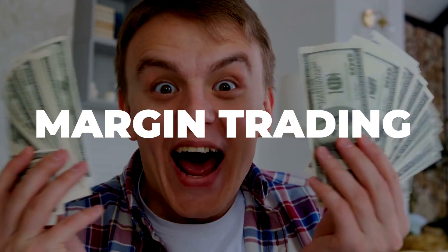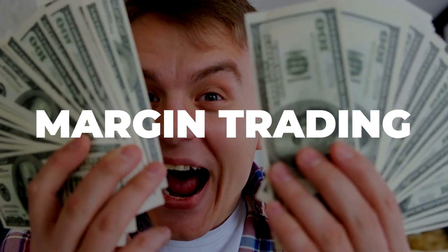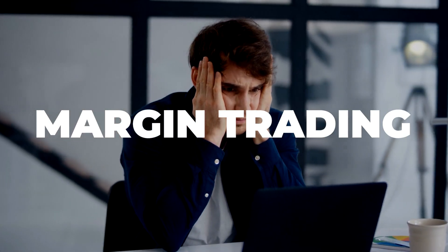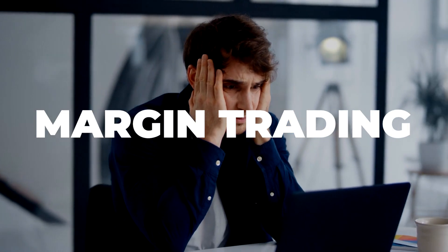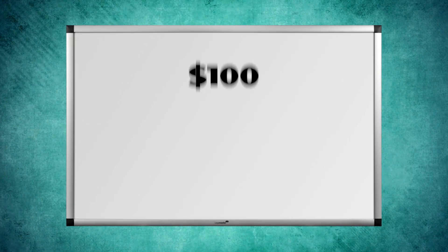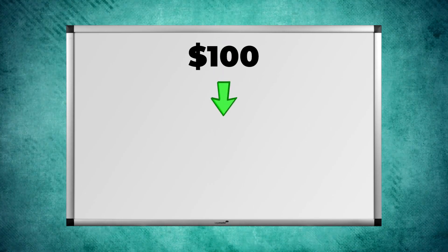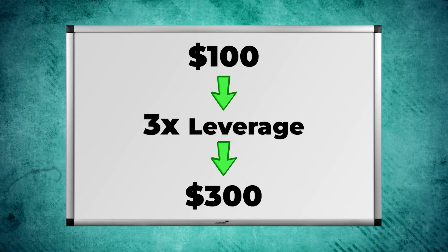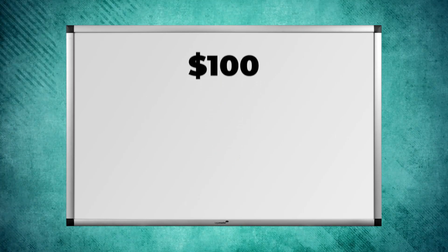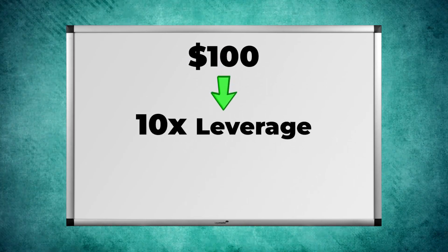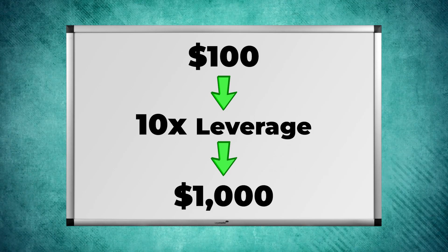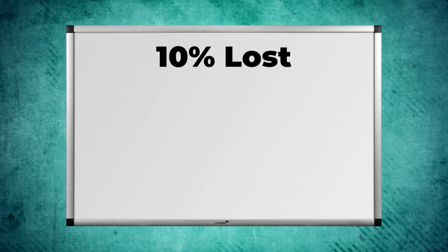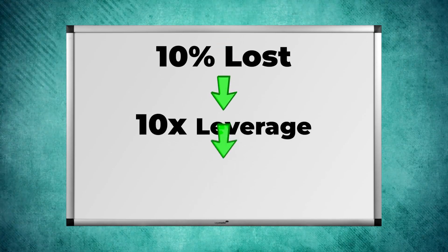With margin trading you can make a lot of money fast, but you can also lose a lot of money fast if you don't know what you are doing. For example, if you normally earn 100 dollars worth of profits but now you do it with 3x leverage, you earn 300 dollars. With 10x leverage you earn 1000 dollars, but the same works in the opposite way — if you normally lose 10 percent and you use 10x leverage, now you will lose 100 percent.